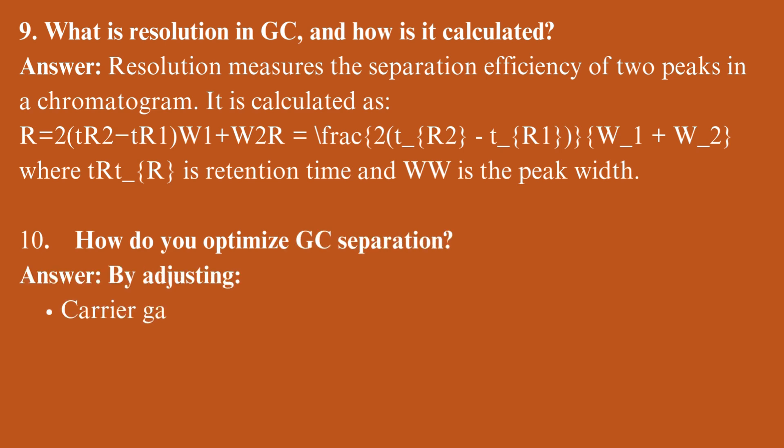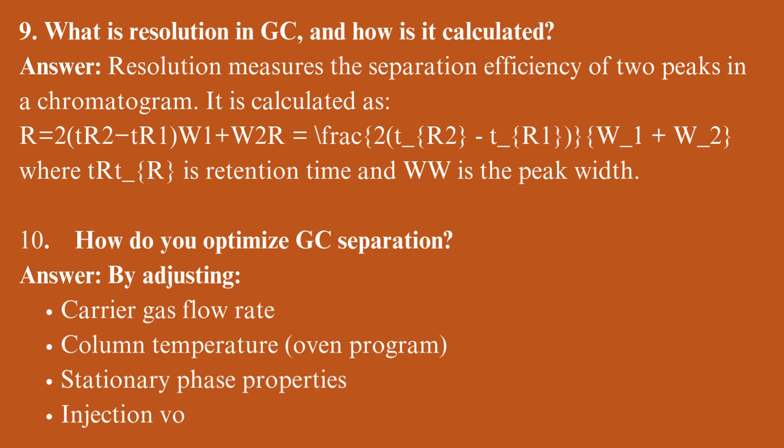How do you optimize GC separation? By adjusting carrier gas flow rate, column temperature, oven program, stationary phase properties, and injection volume.